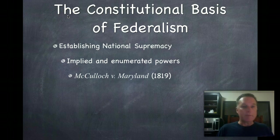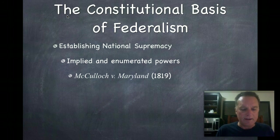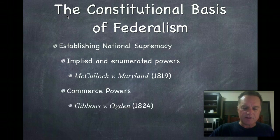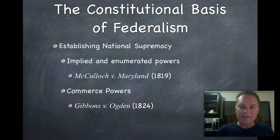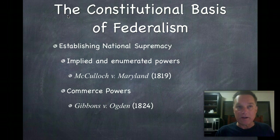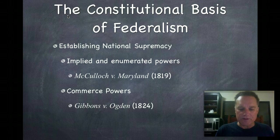Realizing they couldn't make a comprehensive list of powers for the national or state governments, the founders added to Article 1 the Necessary and Proper Clause. This clause states that Congress shall have the power to make all laws which should be necessary and proper for carrying into execution the foregoing powers. Hamilton's argument for national supremacy relied heavily on this clause. The Necessary and Proper Clause is also called the Elastic Clause — if you hear either term, know that they're the same thing. Jefferson's states' rights point of view rested partially on the Tenth Amendment, which reserves powers to the states.